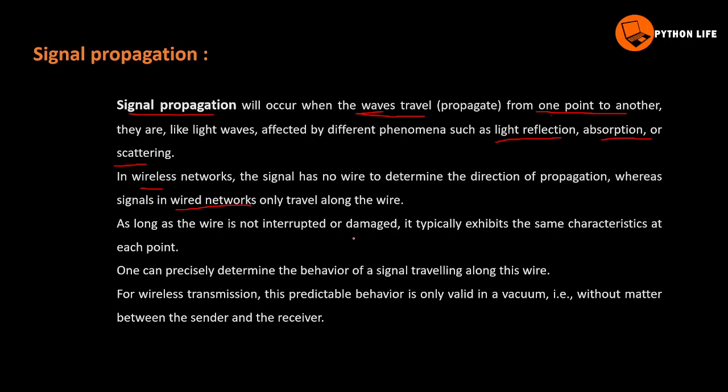If there is a wire at each point, it is a characteristic of the wire. You can precisely determine the behavior of a signal traveling along this wire, since there is a dedicated path along the wire.